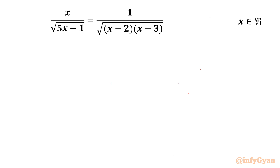Welcome back to Infigyan my dear friends. Today in this video we are having one very interesting rational equation problem. It is x over square root of (5x minus 1) equal to 1 over square root of (x minus 2) times (x minus 3). We have to find out real solutions only.